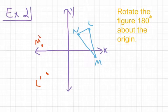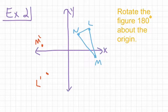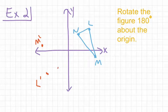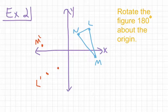And lastly, we look at N. Coordinates for N are 2 comma 3. So the coordinates for N prime are going to be negative 2 comma negative 3. Giving us our point right there. So that will be N prime.